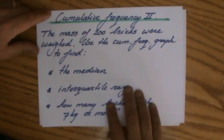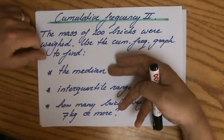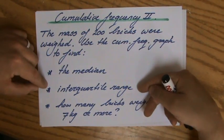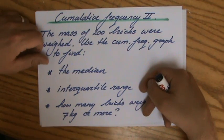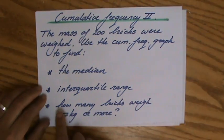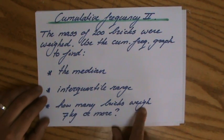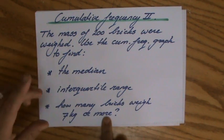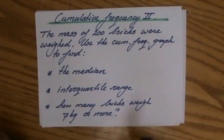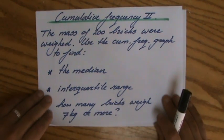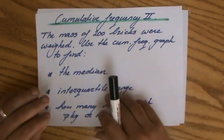And I have to find the median - I expected that. I have to find the interquartile range, that is not a big surprise. And then I have to find how many bricks weigh 7 kilograms or more. Now that's a little bit of an addition to what we've done so far, but you will be doing fine with that as well.